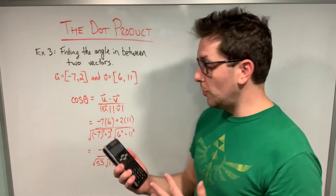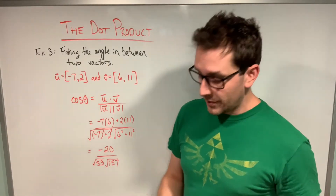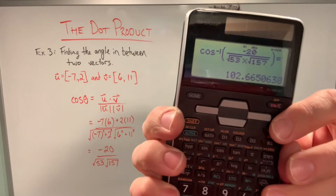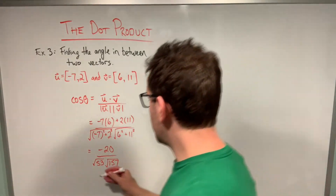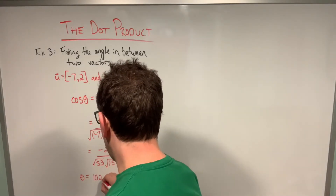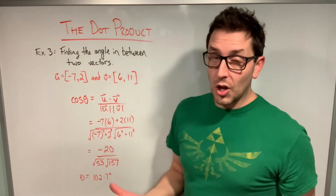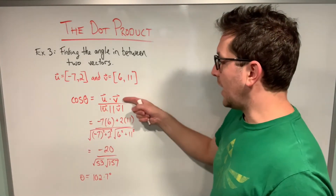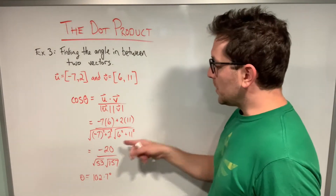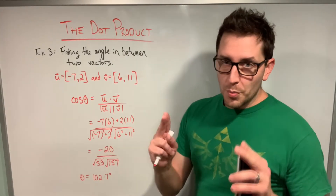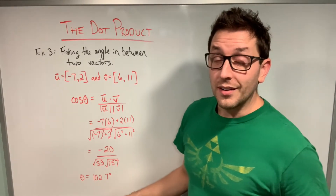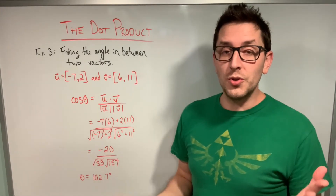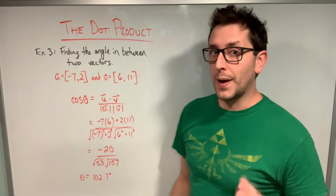Now all I have to do is take the cosine inverse of that entire expression. Punching this into my calculator gives approximately 102.7 degrees. So the angle between these two vectors is approximately 102.7 degrees. Looking back, all you're really doing is rearranging the dot product formula, calculating the dot product using components, applying your understanding of vector magnitude by squaring each component and taking the square root, and then taking the cosine inverse to find the angle. This is the most complex of the three examples but it shows how much you can learn about two vectors by analyzing their dot product.